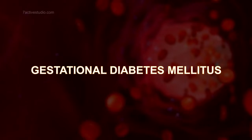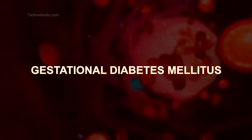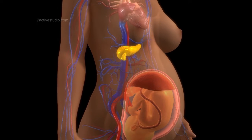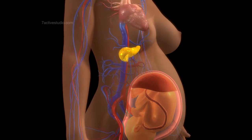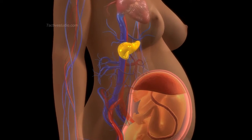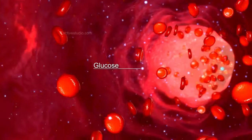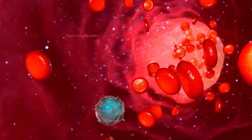Gestational diabetes mellitus is a disorder during pregnancy, characterized by increased levels of glucose in the blood over and beyond the normal limits.